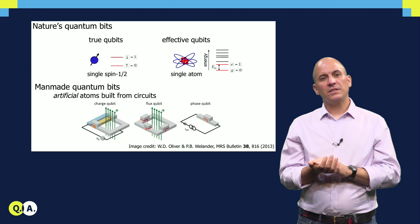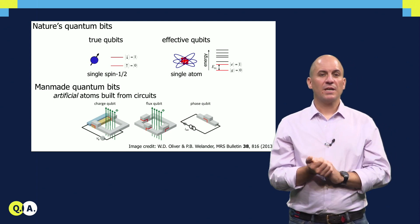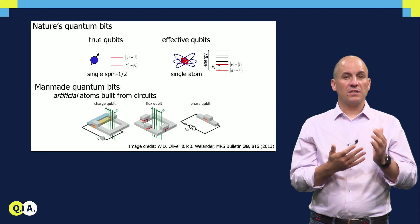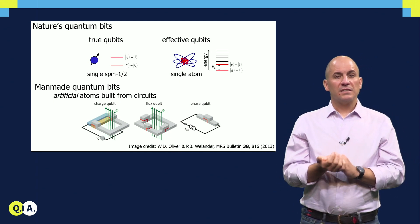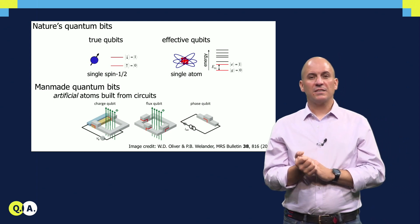While the form of the Hamiltonian describing them quantum mechanically is well known, the parameters of this Hamiltonian cannot be perfectly targeted in fabrication. This has interesting implications for scaling up our quantum processors, which I will discuss in a later video.